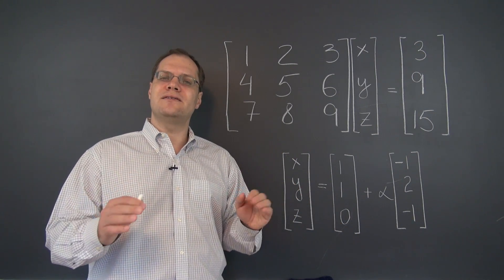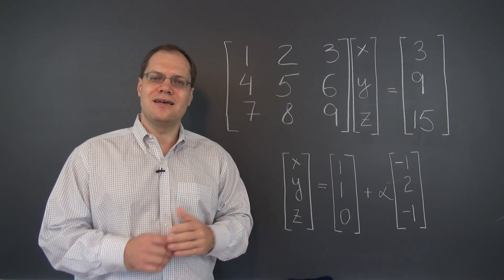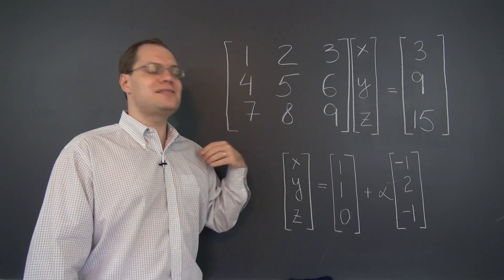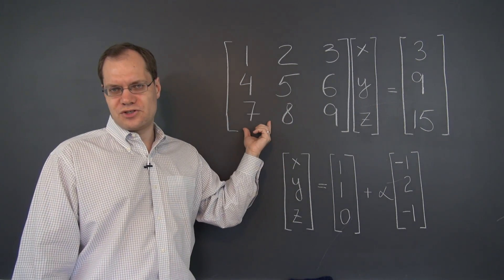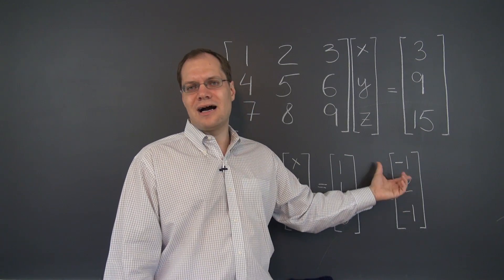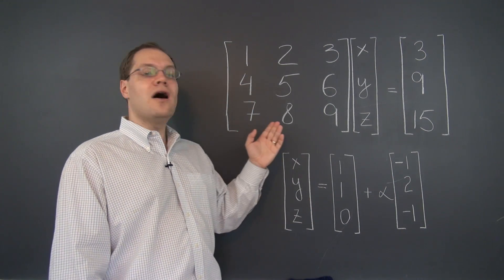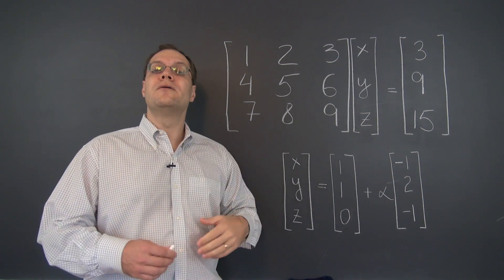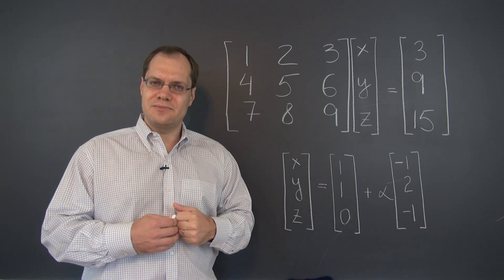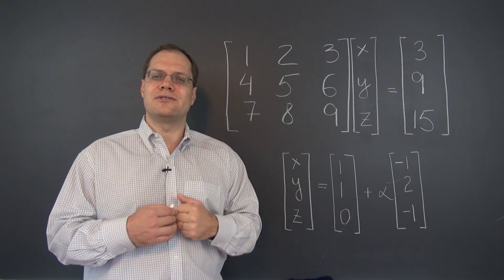Now let's pretend — and in the case of this problem it's not so hard to pretend — that we didn't see these relationships. We didn't see that the right-hand side is the sum of the first two columns, and we didn't see that the middle column is the average of the other two. So how would we bring out those relationships if we don't see them to begin with? Well, the answer of course is Gaussian elimination.